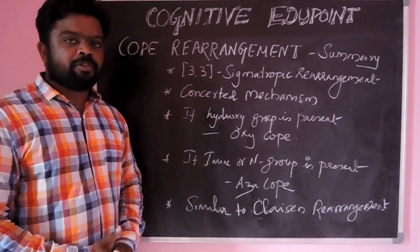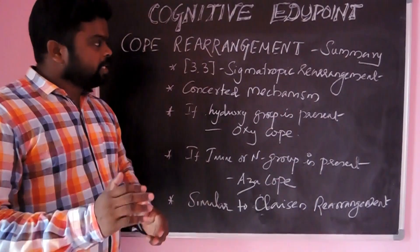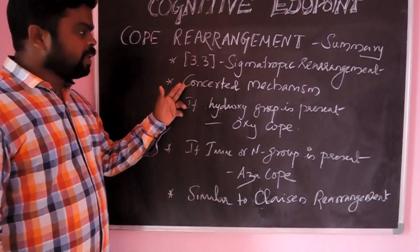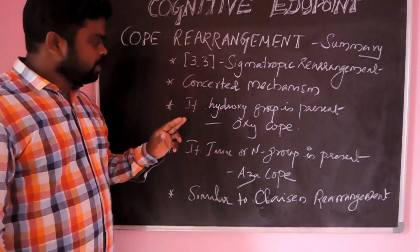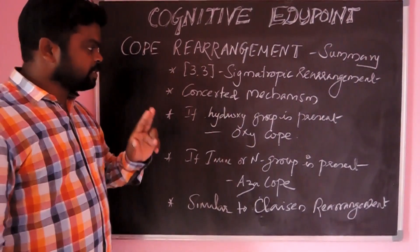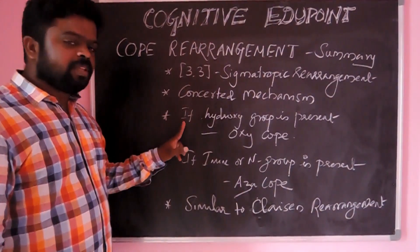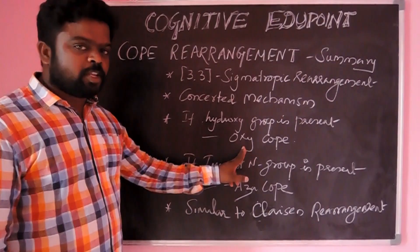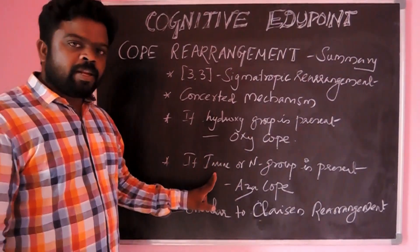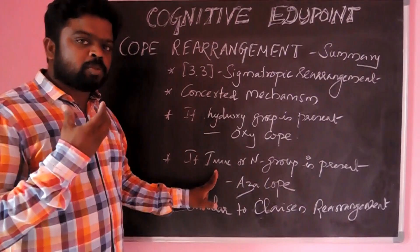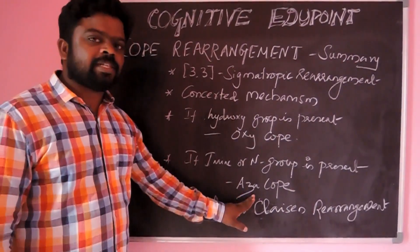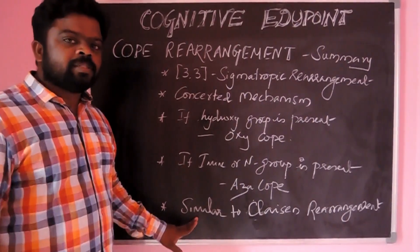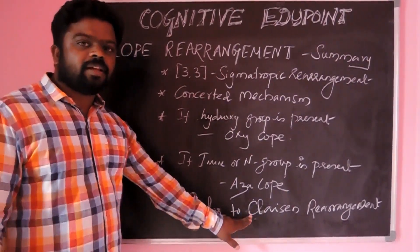Now we will move to the review of Cope rearrangement. This is a 3,3 sigmatropic rearrangement and proceeds via a concerted mechanism with a six-membered intermediate. If the substituent is a hydroxyl group, it is called oxy-Cope rearrangement. If an imine or nitrogen substituent is present, it is called aza-Cope rearrangement. Cope rearrangement is similar to the Claisen rearrangement.